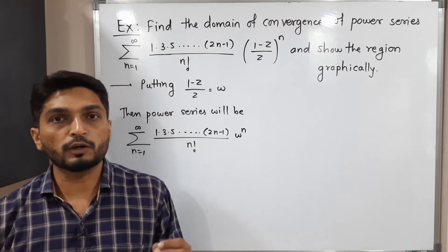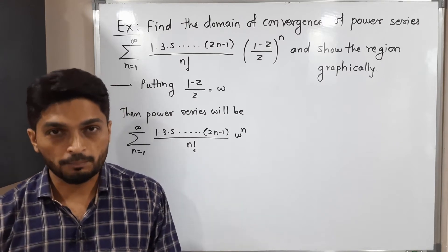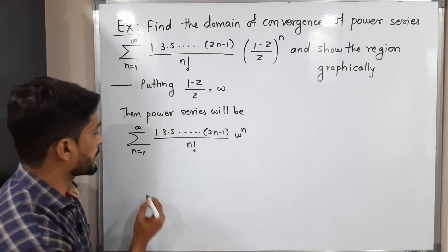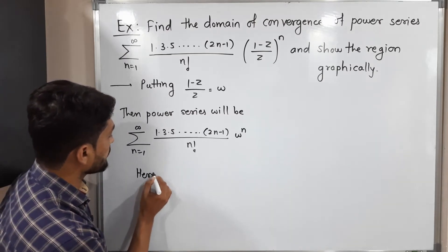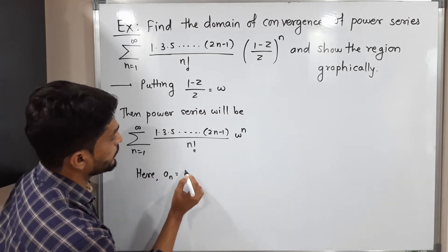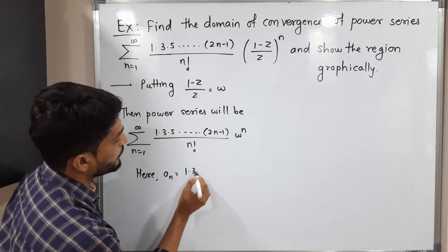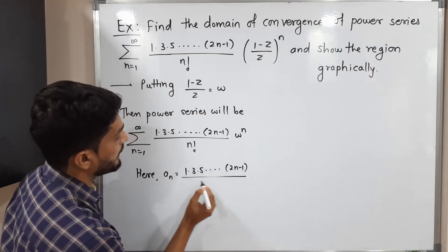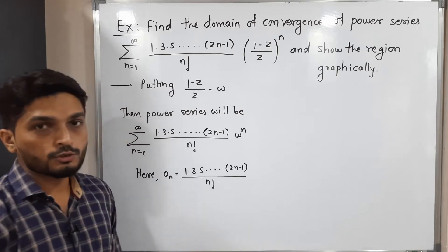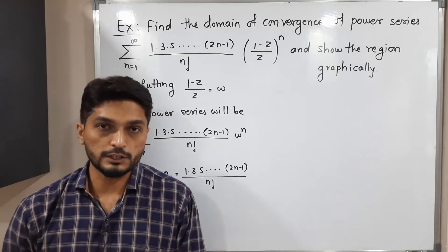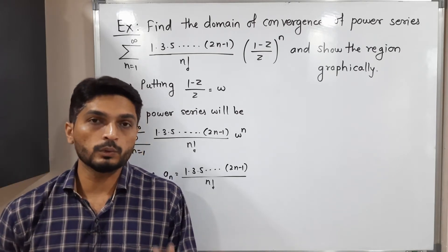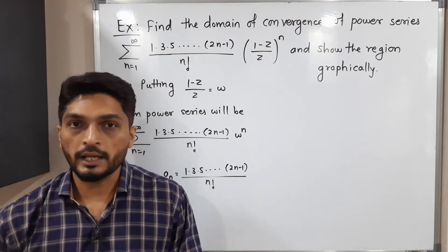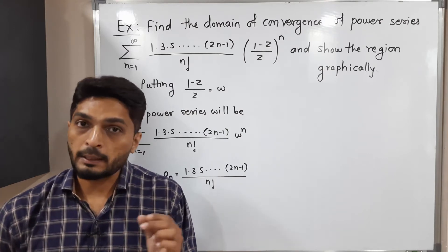Here a_n is the coefficient of w raised to n, so a_n equals 1 times 3 times 5 and so on to (2n minus 1), divided by n factorial. The formula for radius of convergence is R equals the limit as n tends to infinity of |a_n / a_{n+1}|, so a_{n+1} is also required.